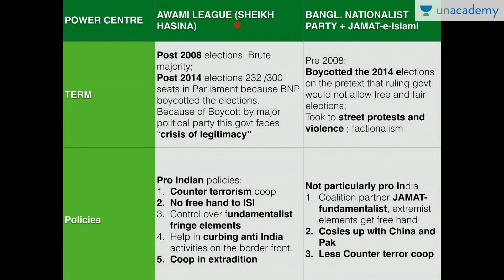We should differentiate between the two sides: on one side the Awami League, on the other the Bangladesh Nationalist Party and Jamaat-e-Islami. Jamaat-e-Islami is a fundamentalist Islamist political party whose constitutional mandate calls for imposing Sharia under the guidance of Allah. Post the 2008 elections, Sheikh Hasina and the Awami League came to power with a brute majority, and again in 2014 with approximately 232 seats out of 300 constituencies. However, some people say it is facing a crisis of legitimacy.